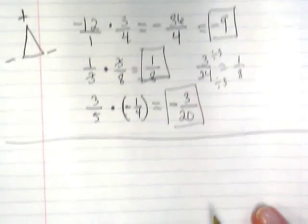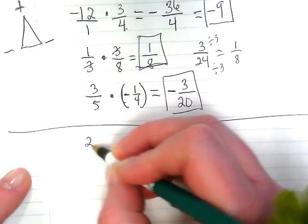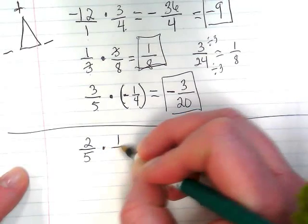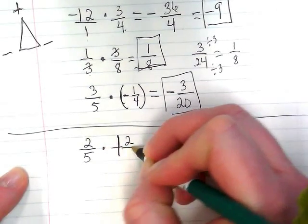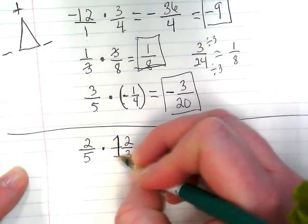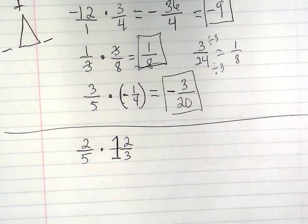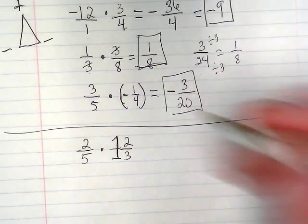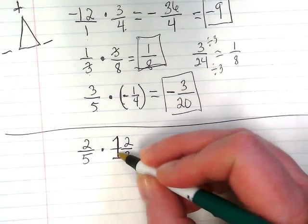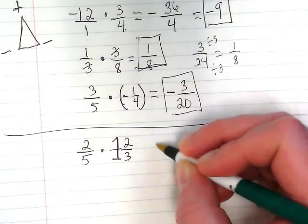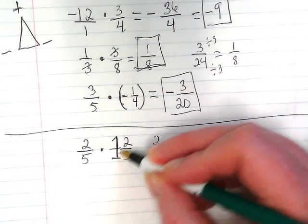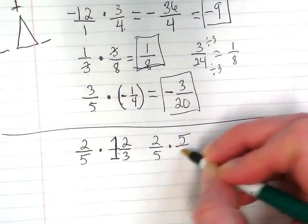Now let's do some examples with mixed numbers. If I have 2 fifths times 1 and 2 thirds. Sorry about that. Unlike when we're adding and we can just take the whole numbers and put them together, we need to convert this mixed number to an improper fraction. So we're going to do 3 times 1 plus 2. And we're going to rewrite this as 2 fifths times 3 times 1 is 3 plus 2 is 5. I get 5 over 3.